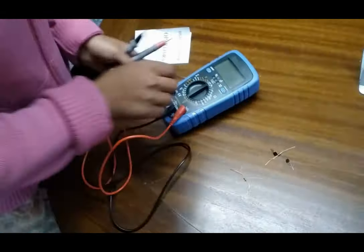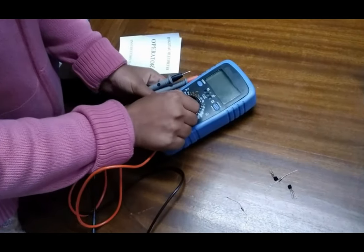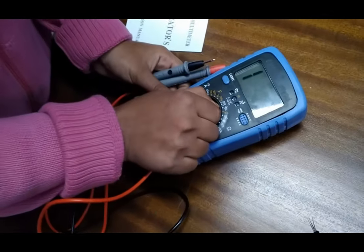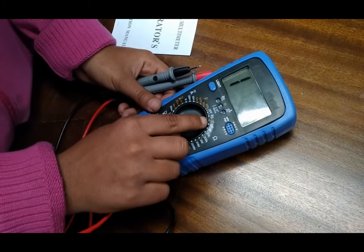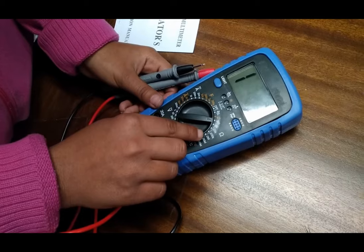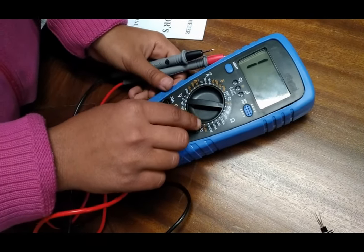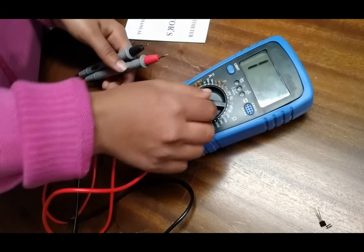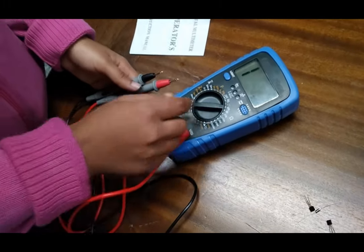For this, we will turn on our multimeter and set it to a resistance value. Here we have 200 ohm, 2k ohm, 20k ohm, 200k ohm, 2 mega ohm, etc. Now we set our multimeter to any value.